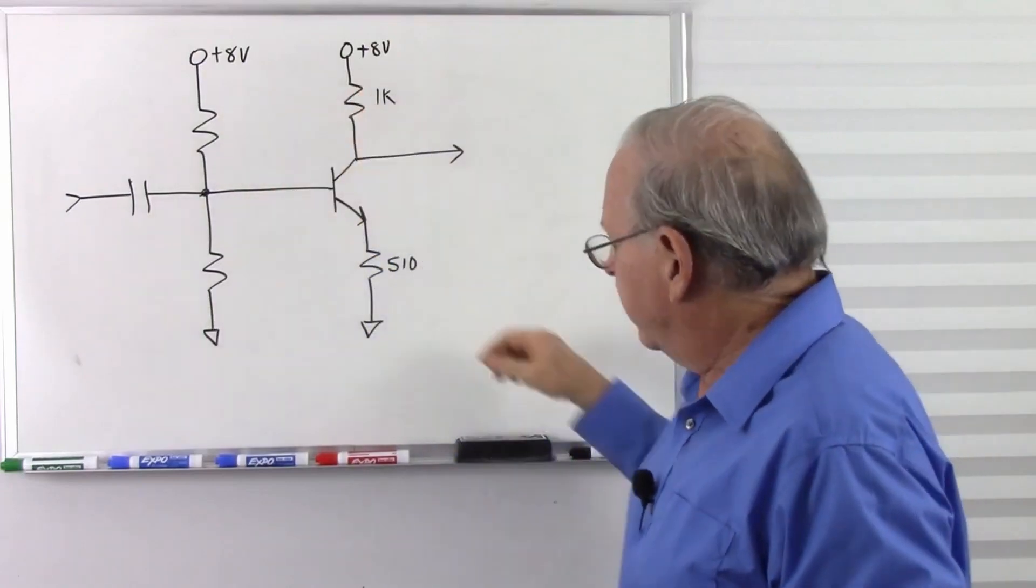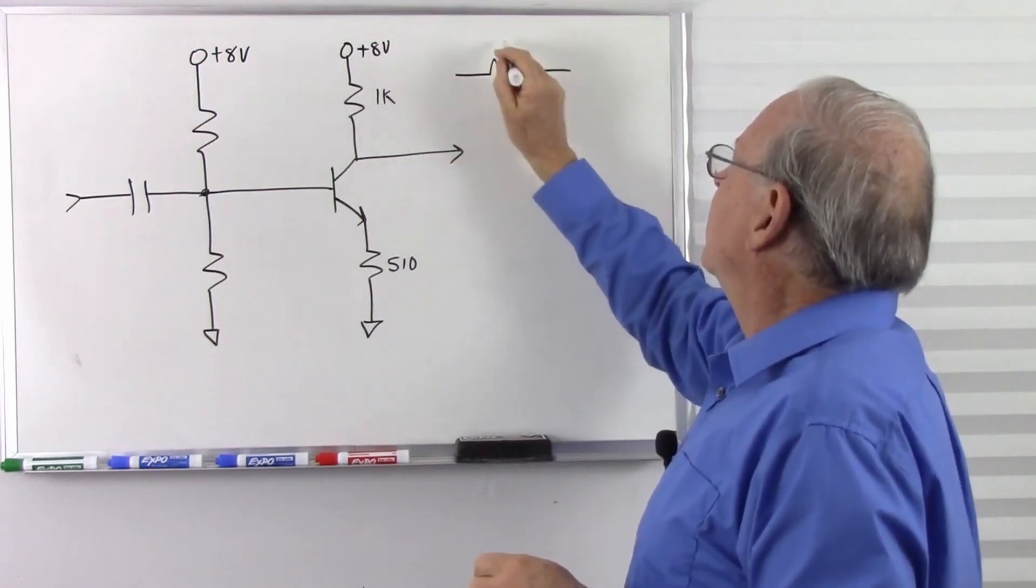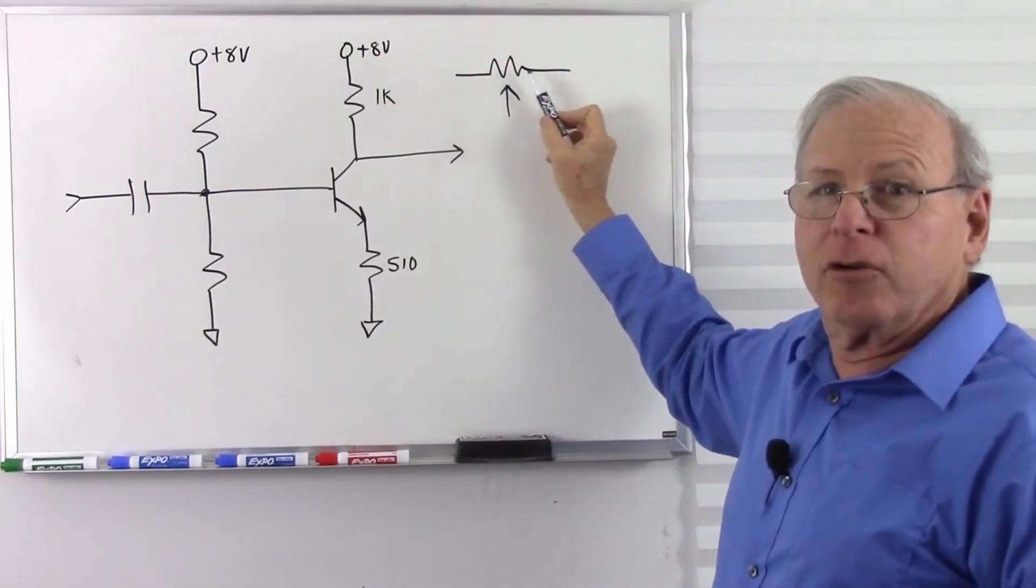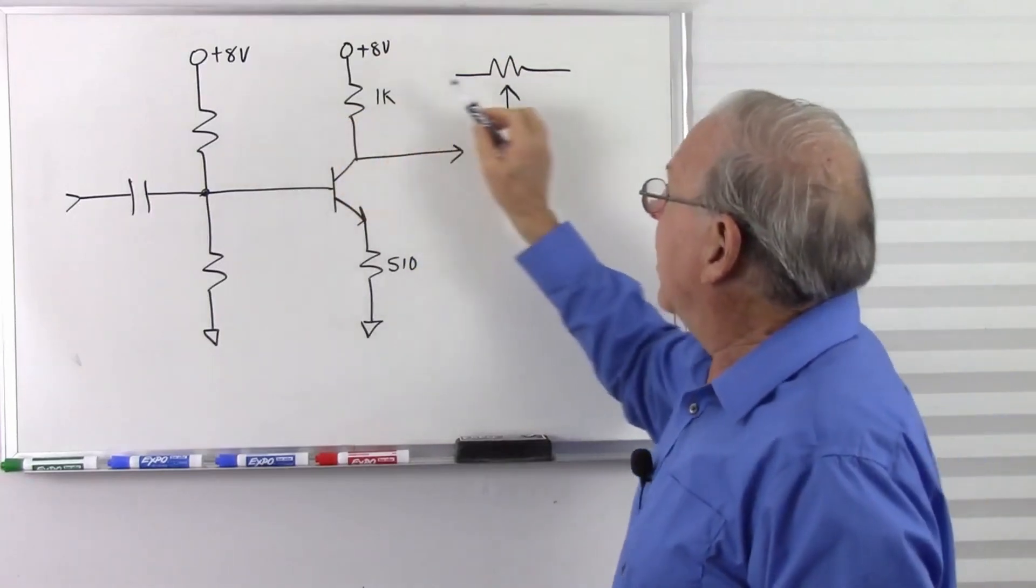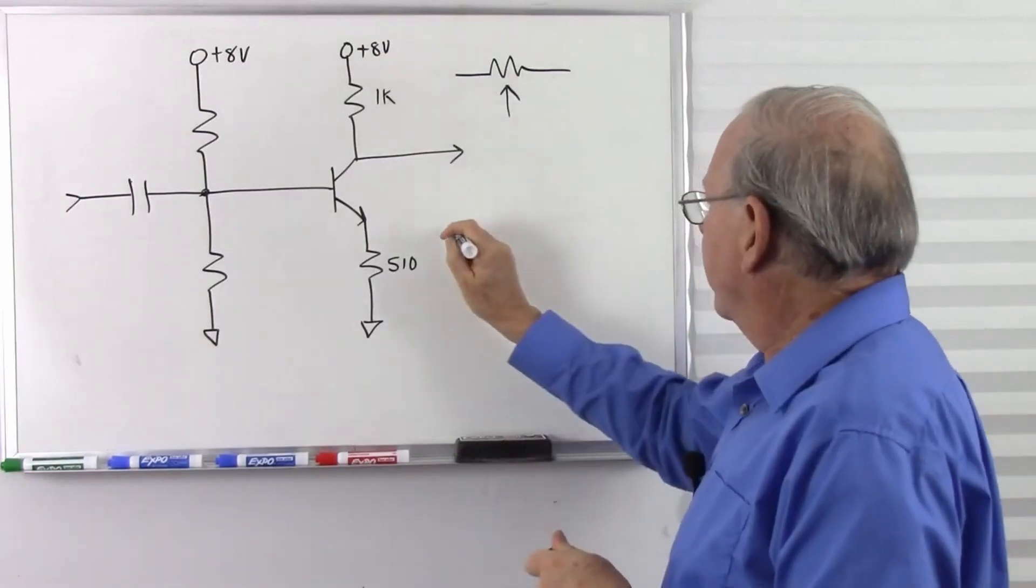It's just simply a resistor with a contact point. And so it acts like two resistors, where as I turn it this way, this side gets smaller. Let me just draw that as two resistors here.